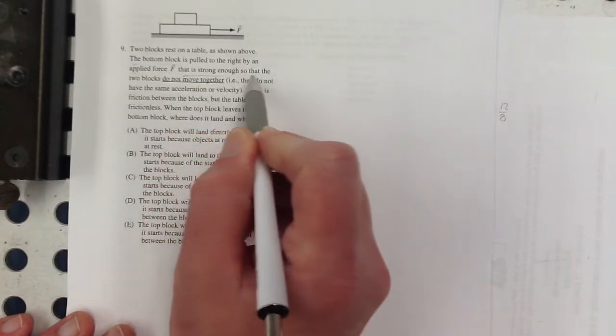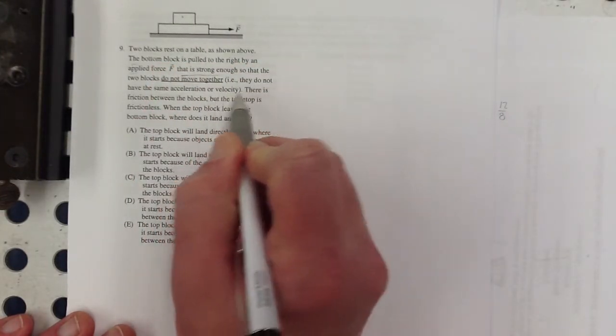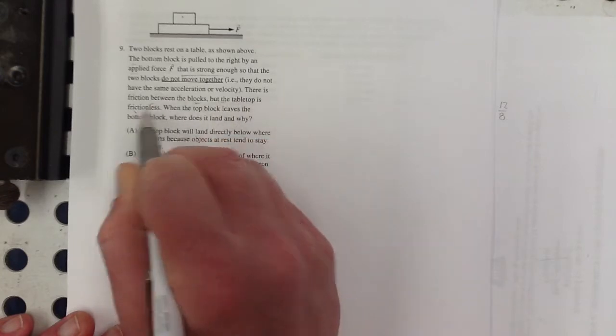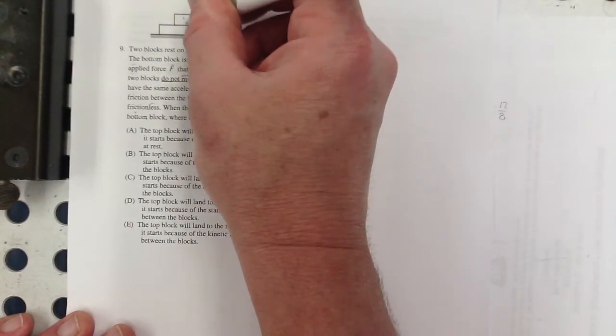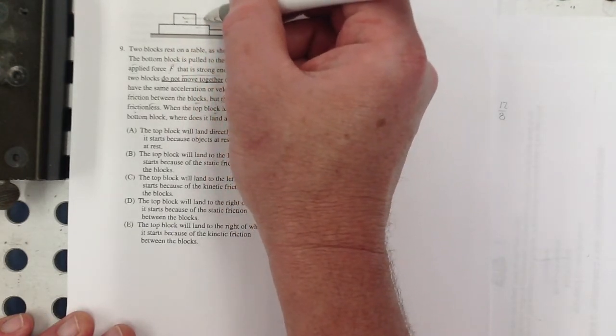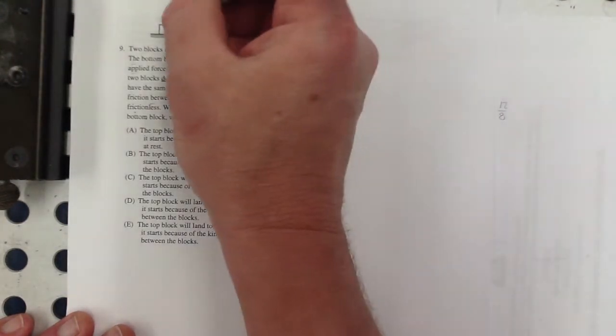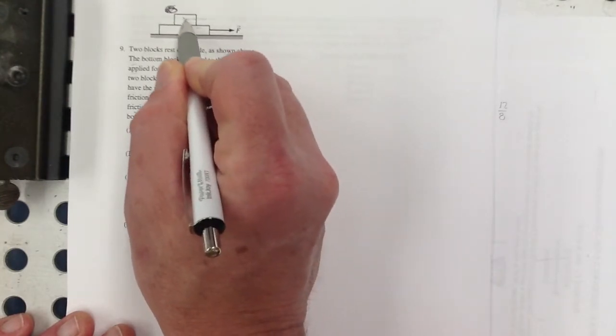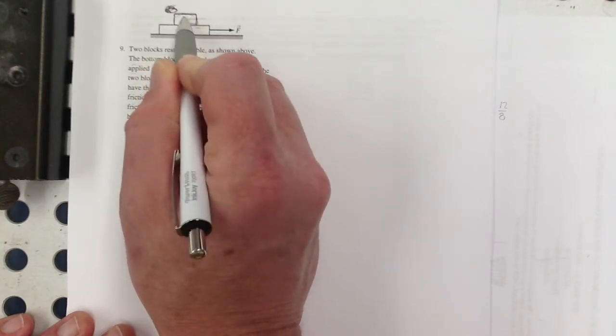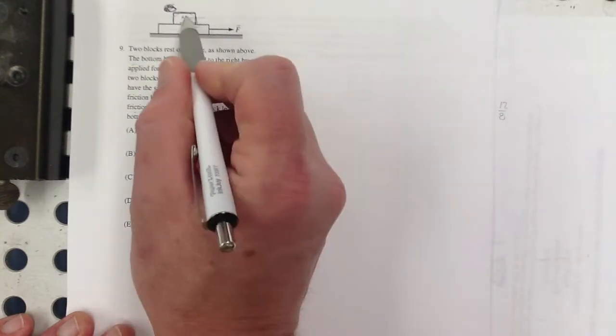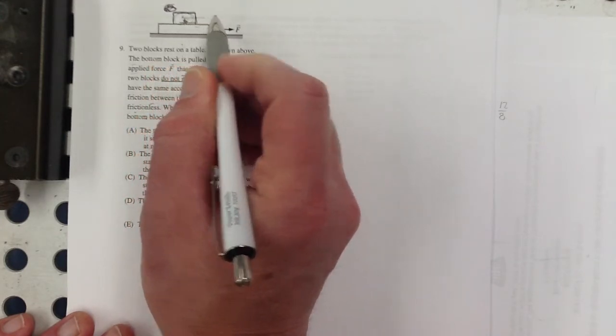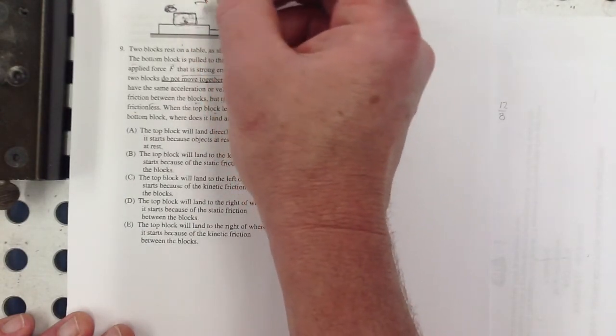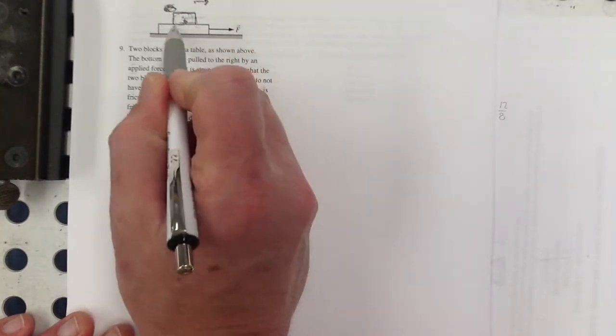All right. Two blocks rest on a table as shown above. The bottom block is pulled to the right by an applied force that is strong enough so that the two blocks do not move together. It's going to slip. Okay. There is friction between the blocks, but the tabletop is frictionless. When the top block leaves the bottom block, where does it land? Well, this is going to get pulled this way, and there is some friction. So friction opposes the direction of motion. So this is going to move this way, and the friction is going to be on it. Hold on. That's not true.